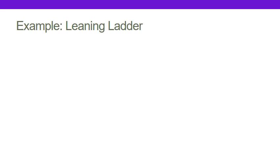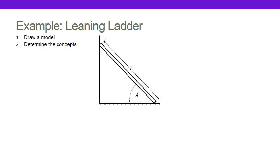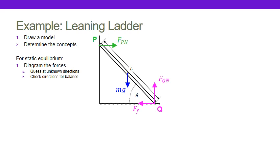When I plug in my number, the coefficient of static friction is 0.85, and I see that my ladder has to be set at an angle greater than about 30 degrees. So let's think about what we did to get there, because this is the way you will approach probably all static equilibrium problems. Once we understood what was going on, we started by drawing a model of our system and determining what concepts we could use.